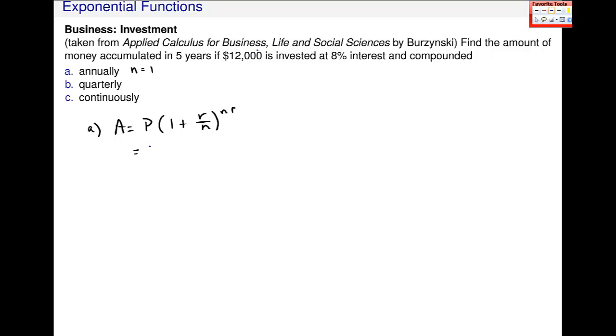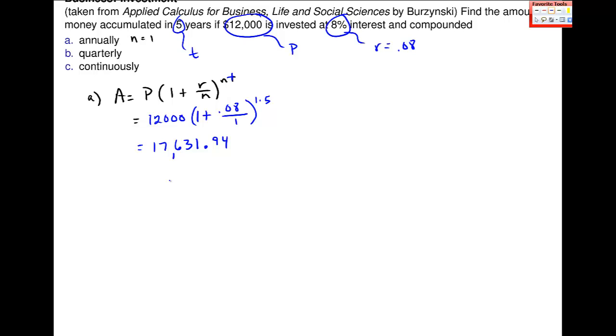And when I plug in here, 12,000 is my principal, 8% is my interest rate, which is .08, and five years is T, right? So I get 12,000, 1 plus .08 divided by 1, this is T, 1 times T. So 12,000, T is 5, right? 12,000 times 1 plus .08 to the fifth power. I get 17,631.94. Let's do part B.